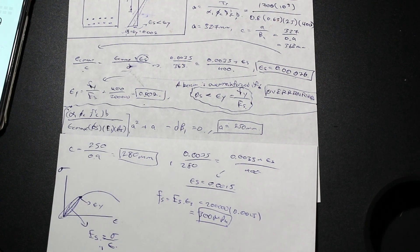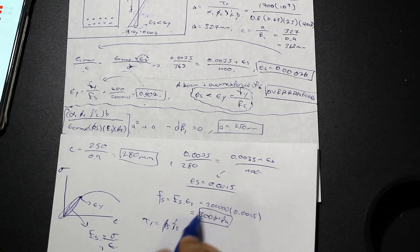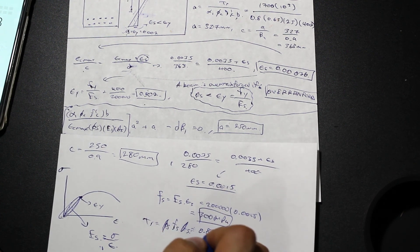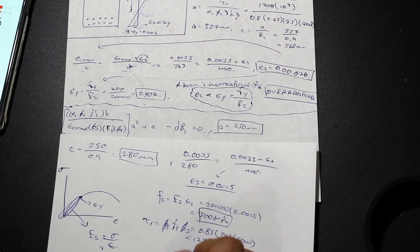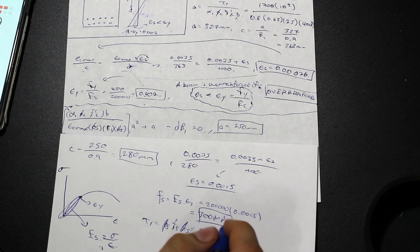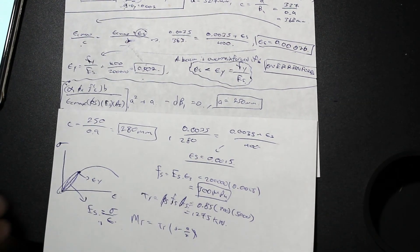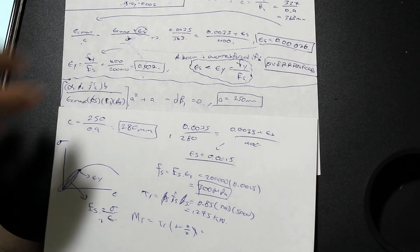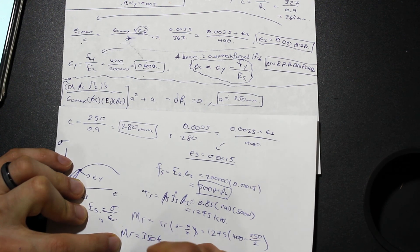Now we can solve for the tensional force. Tr = φ_s · fs · As — note we use fs instead of fy because fs is the actual stress in the steel. That gives Tr = 0.85 × 300 × 5000 = 1275 kN. Finally, plugging values into the moment resistance equation, we get a factored moment resistance of 350 kN·m.